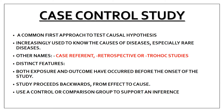Starting with the first: the case-control study. It is the first form and approach to test the causal hypothesis. The hypothesis that smoking causes cancer is tested here. It is increasingly used to know the causes of disease. Case-control study is also known as case-referent, retrospective, or 'trohog' study. 'Trohog' is simply 'cohort' spelled backward (T-R-O-H-O-C), because it is the opposite of a cohort study.